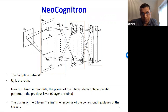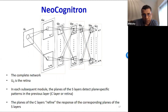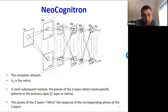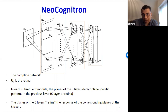In the first block, a collection of S planes: each S-plane cell looks at an elliptical region of the input and all cells within any given S plane have identical response. Each C-plane cell computes its response from an elliptical region of the corresponding S plane. In subsequent layers, each S plane looks at elliptical regions of the previous C plane, and then the corresponding C plane looks at elliptical regions of the S plane within the same block.